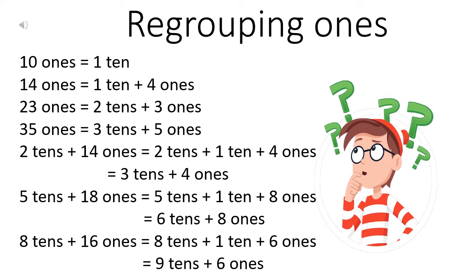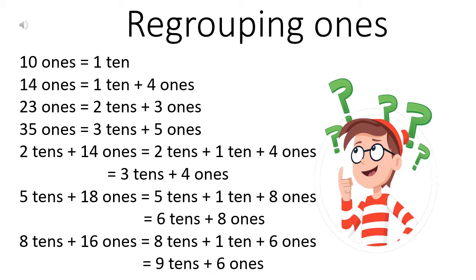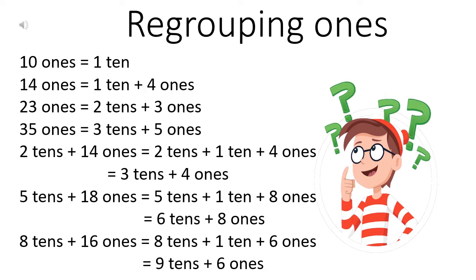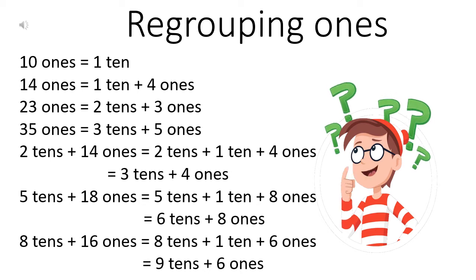Now suppose you have twenty-three pencils. You will make two bundles of tens and keep three pencils loose — that means you got two tens and three ones. And if you have thirty-five pencils, you will make three bundles of tens and you will have five ones. That means thirty-five ones is equal to three tens plus five ones.